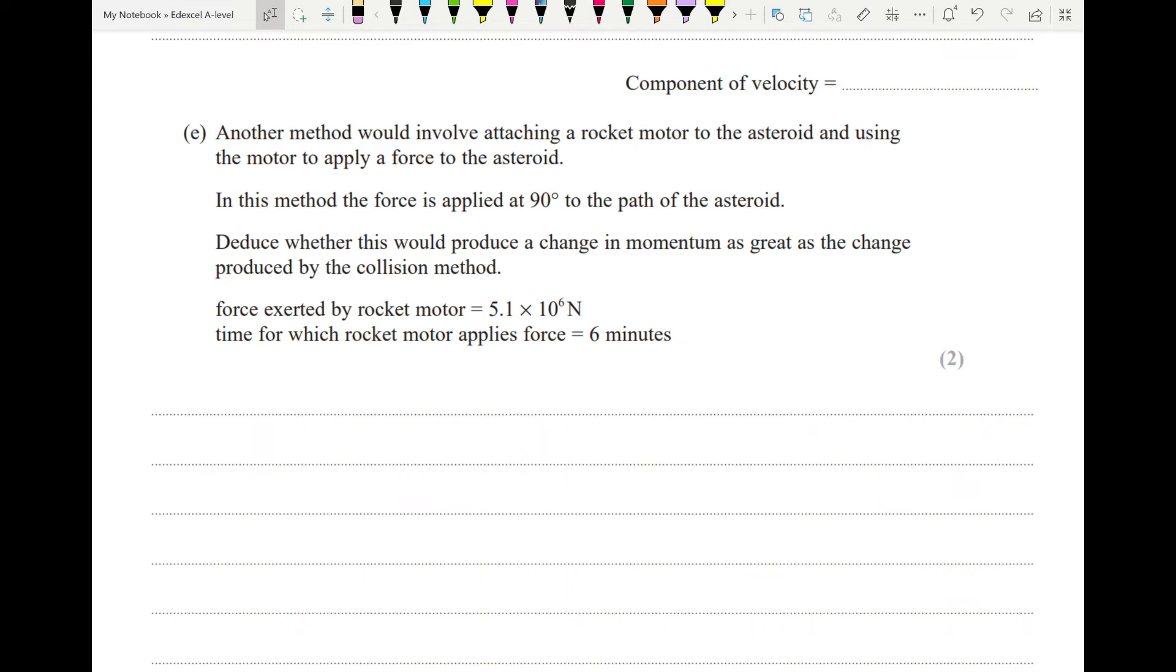Another method would involve attaching a motor and using the motor to apply a force. In this method, the force is applied at 90 degrees, so the same situation. Deduce whether this would produce a change in momentum as great as the change produced by the collision method. This one is basically testing that you know that change in momentum is equal to impulse, which is force times time. This is our force, and our time should be in seconds, so at the moment it's in minutes, we just change that into seconds. That gives us a change in momentum of 1.84 times 10 to the 9 newton seconds, or kilograms meters per second.